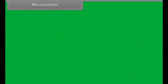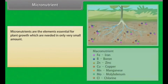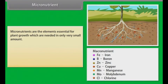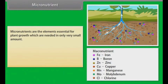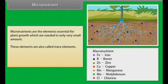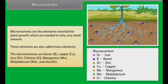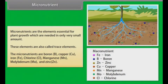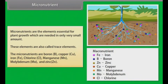Micronutrients are elements essential for plant growth that are needed in only very small amounts; they are also called trace elements. The micronutrients are: boron, copper, iron, chlorine, manganese, molybdenum, and zinc.